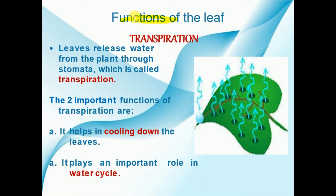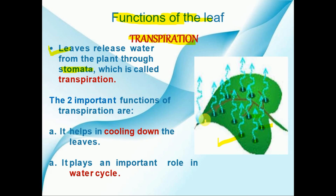After this, we will move towards the functions of the leaf. We will understand the functions of the leaf under two categories: one is transpiration and the second one is photosynthesis. Transpiration means when the leaves release water from the plant through stomata. You can see the leaf comprises many small pores — these small pores are known as stomata. If you want to observe these stomata, you cannot see them directly; you have to view the leaf under the microscope.